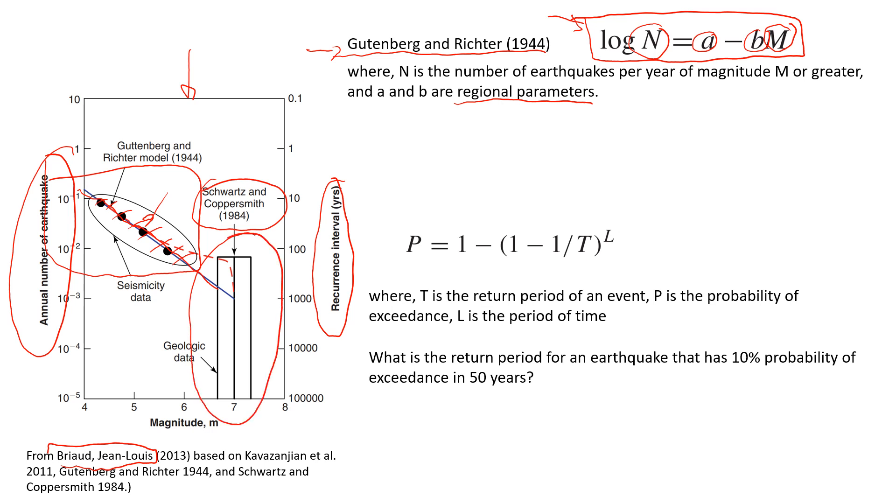So you see that for earthquakes which are greater than six, we also need to consider geologic data such as fault length and historic slip rate. So in this particular case, that's what we need to do. And this will be a little bit improvement compared to the Gutenberg Richter model.